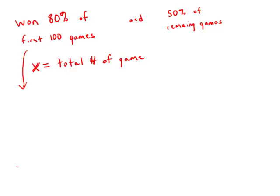In the first 100 games, they win 80% of their games, so they win 80 games. The remaining games would be the total number minus 100.